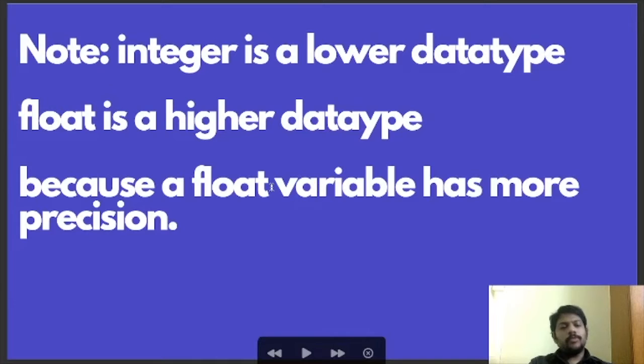A float variable has more precision than an integer variable, and when you deal with variables of both data types, data loss can definitely happen because one has more precision than the other.